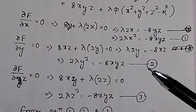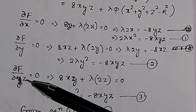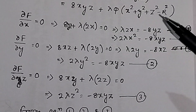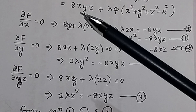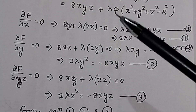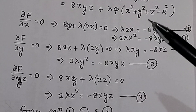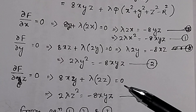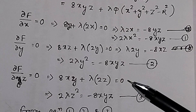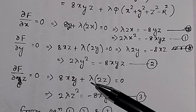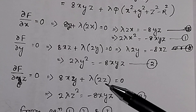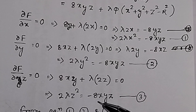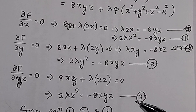Taking the partial derivative of F with respect to z equal to 0, the partial derivative is 8xy + λ(2z) = 0. Multiplying z on both sides gives 2λz² = −8xyz. This is equation number 3.